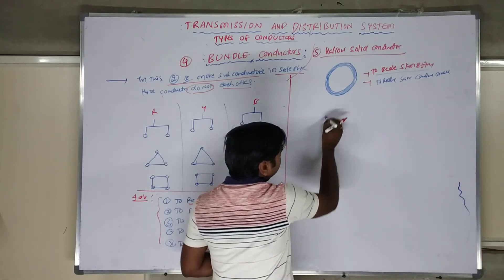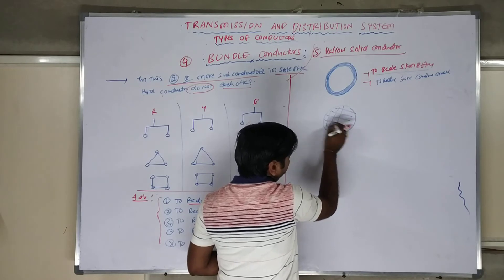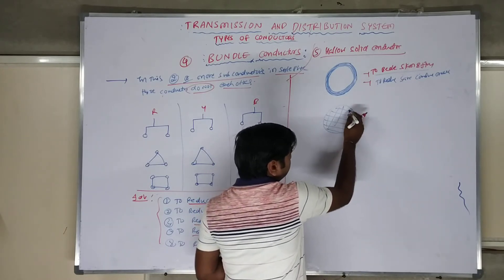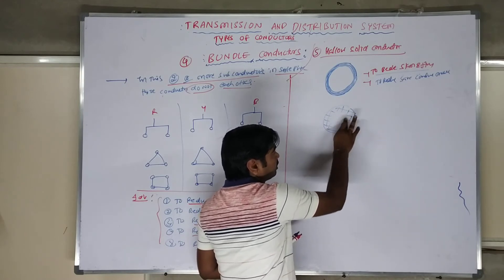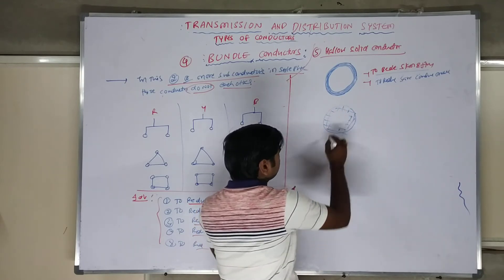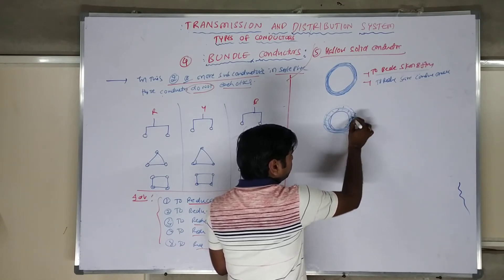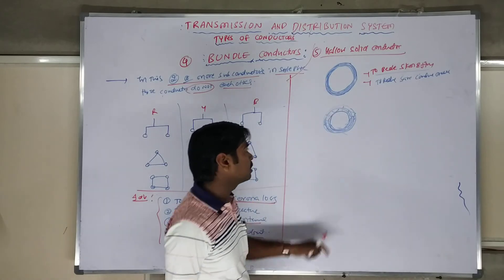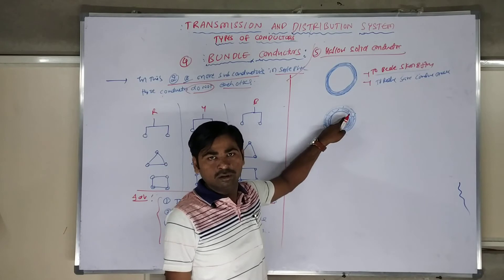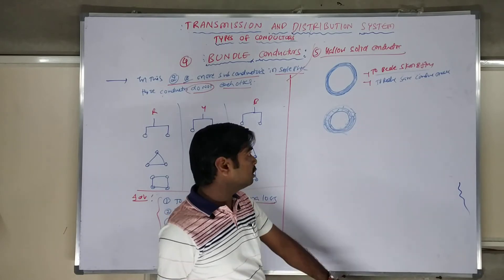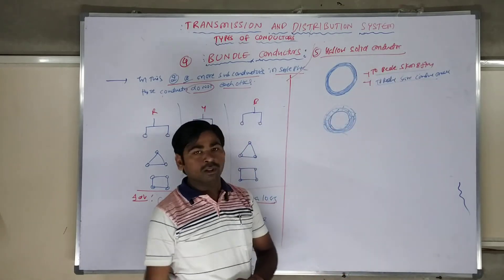Let us understand this. If we take a total complete solid conductor material, the current flows only on the outer surface area due to the skin effect. So the inner portion is not useful. That is what causes the skin effect — wasting of the conductor. If we remove the inner material, we can save the conductor material. This is the concept of a hollow solid conductor.